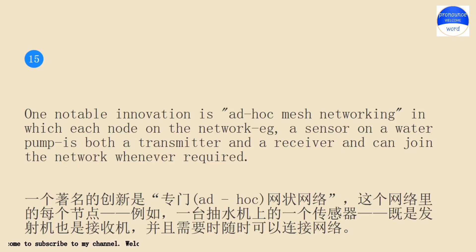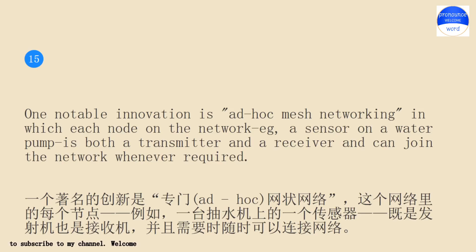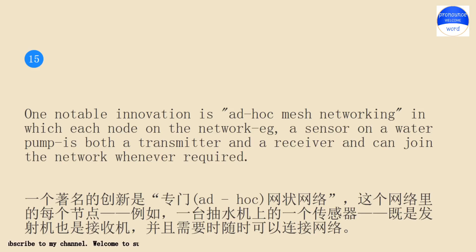One notable innovation is ad hoc mesh networking, in which each node on the network, e.g., a sensor on a water pump, is both a transmitter and a receiver and can join the network whenever required.